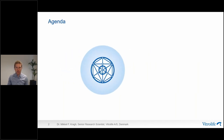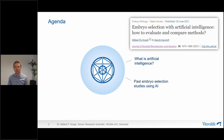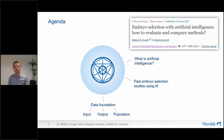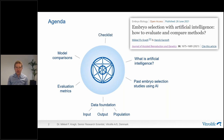To give an overview of my talk, I'll start with a brief introduction to what artificial intelligence actually is. Then I'll go through the main topics of our paper recently published in the Journal of Assisted Reproduction and Genetics, where we reviewed 13 past studies that used AI for embryo selection. I'll cover the data foundation, evaluation metrics, model comparisons — specifically human versus AI comparisons — and finally a short checklist of main points to be aware of when reading AI studies.